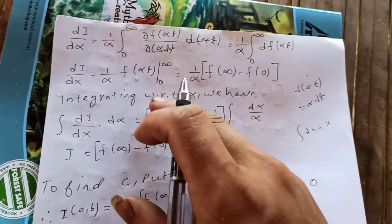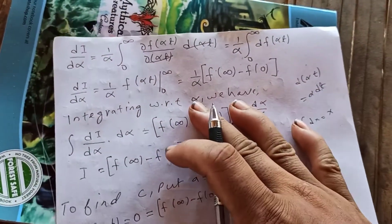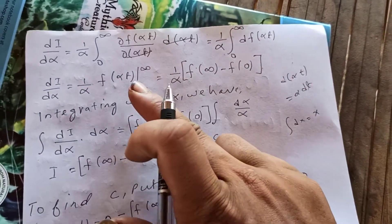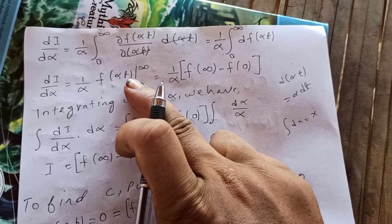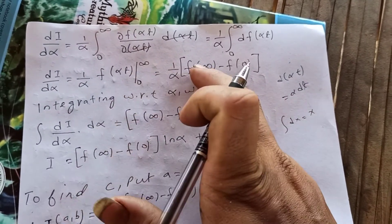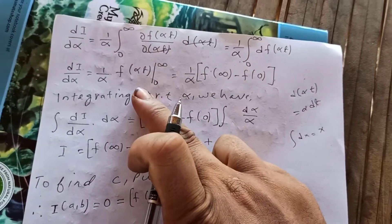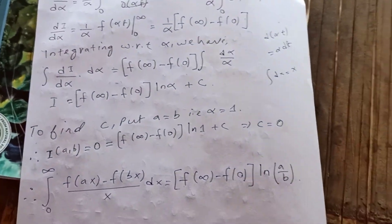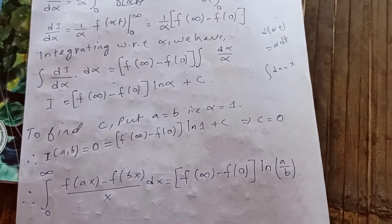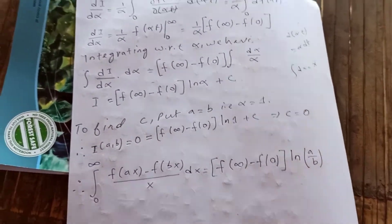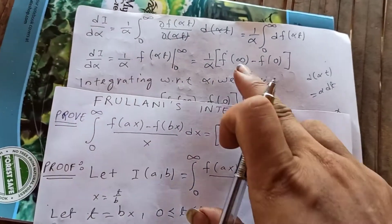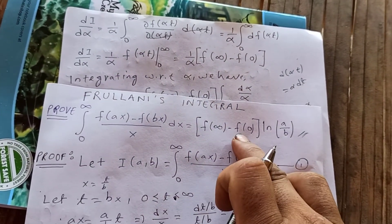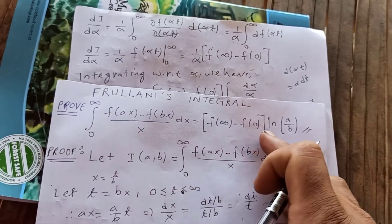So dI/dα = (1/α)[f(∞) - f(0)]. This is similar to what we want to get in the final result.